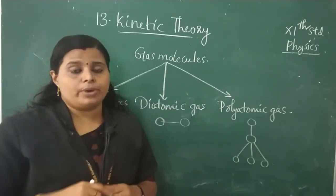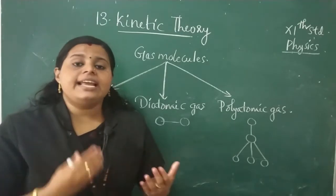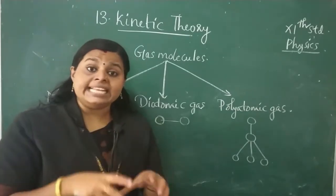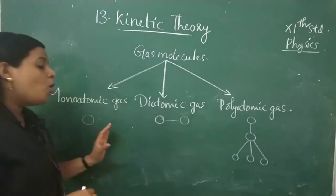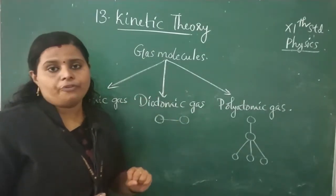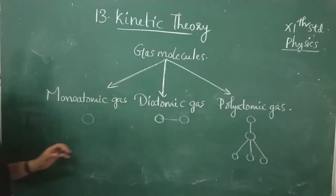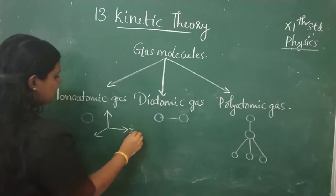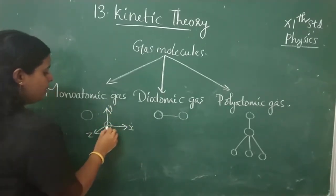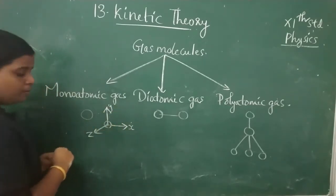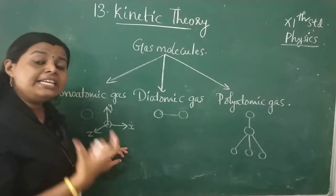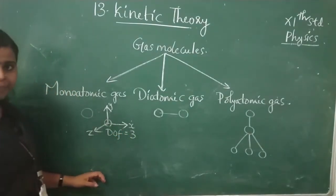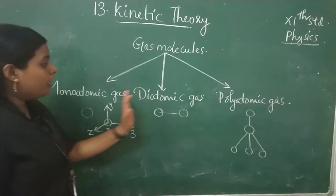For a monoatomic gas, we have three mutually perpendicular axes — X, Y, and Z. The monoatomic molecule can move independently in the X, Y, and Z directions, giving three translational degrees of freedom. There is no rotation and vibration in this case, so the total degrees of freedom for a monoatomic gas is 3.